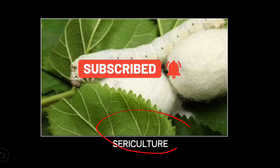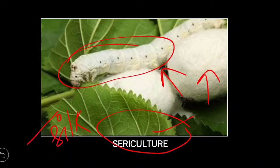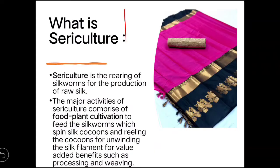Welcome to the Insecta channel. Today we'll discuss sericulture. Silk is a natural fiber prepared by silkworms, and the rearing of silkworms to produce silk is known as sericulture.